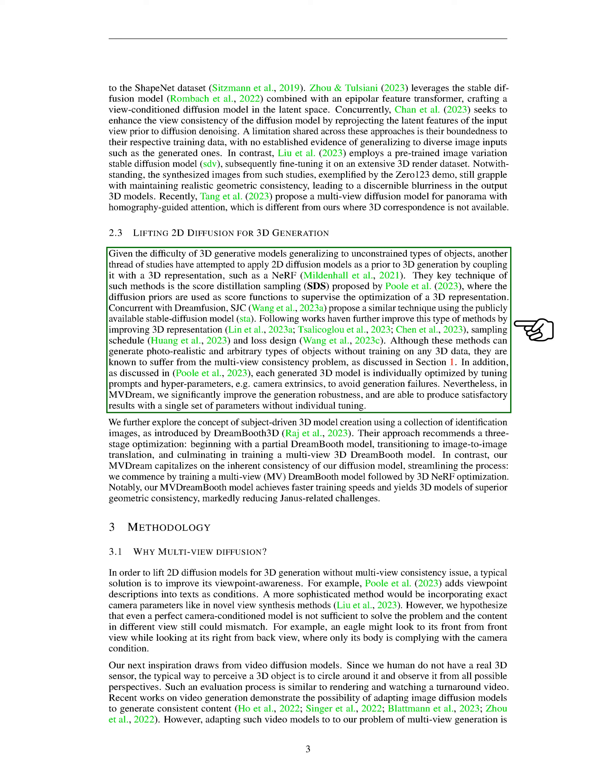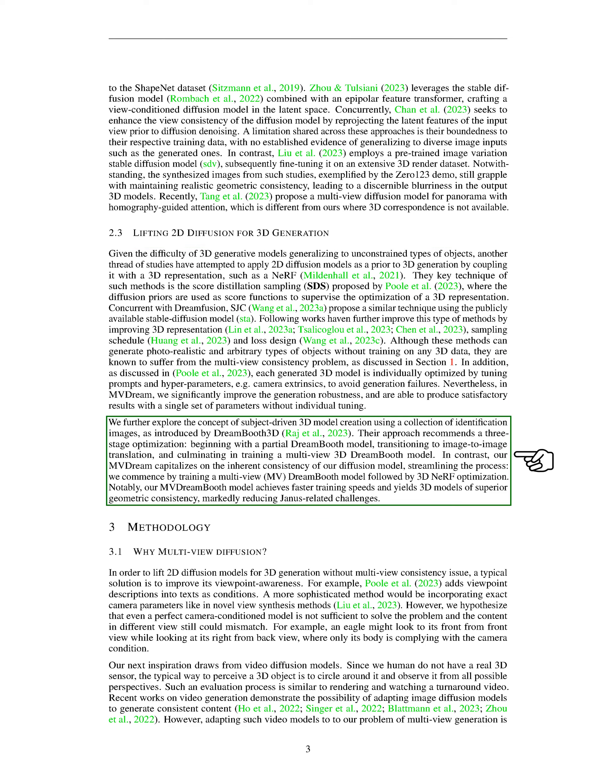In our approach, MVDream, we've significantly improved the robustness of the generation process. We can produce satisfactory results using a single set of parameters, eliminating the need for individual tuning. We've also explored creating 3D models based on a collection of identification images, a concept introduced by DreamBooth 3D. Unlike DreamBooth 3D's three-stage optimization process, our MVDream approach simplifies the process by leveraging the inherent consistency of our diffusion model. We start by training a multi-view DreamBooth model, followed by 3D NeRF optimization.